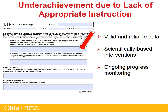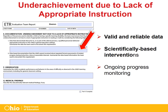For underachievement due to lack of appropriate instruction, the team must demonstrate with valid and reliable data that the child was provided appropriate instruction, and repeated assessments of achievement were completed at reasonable intervals showing student progress or lack thereof. Interventions that are used to establish this must be scientifically based, provided at appropriate levels of intensity, frequency, duration, and integrity, and relative to the child's identified needs. Ongoing progress monitoring must include technically adequate assessment procedures, be conducted while the child is receiving scientifically based instruction, and must be reported to the child's parents.